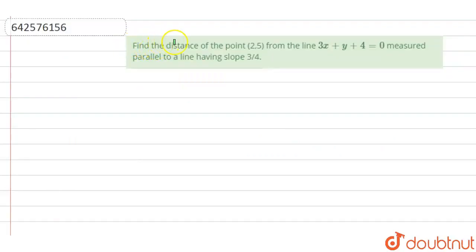In this problem, we have to find the distance of point (2,5) from the line 3x + 4y = 0, measured parallel to a line having slope 3/4.